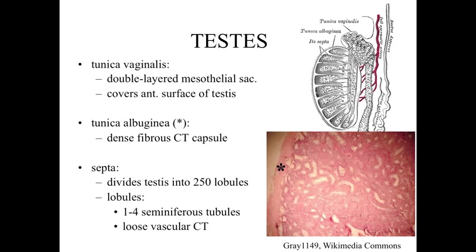If we take a look at the testes as an organ, they are located within the tunica vaginalis — a double-layered mesothelial sac covering the anterior surface of the testes. Beneath that we see a dense fibrous connective tissue, the tunica albuginea, similar to what we saw surrounding the ovaries. Walls of the tunica albuginea extend down as dense connective tissue septae, dividing the testes into about 250 lobules. Within each lobule we have loose connective tissue and anywhere from one to four seminiferous tubules, visible in both the diagram and the histological image.